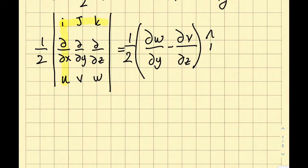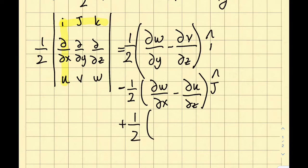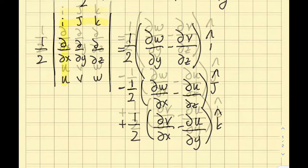For the j direction, there is a negative sign in front, giving: minus (del w/del x minus del u/del z) in the j direction. For the k direction, closing off the third column gives: del v/del x minus del u/del y in the k direction.